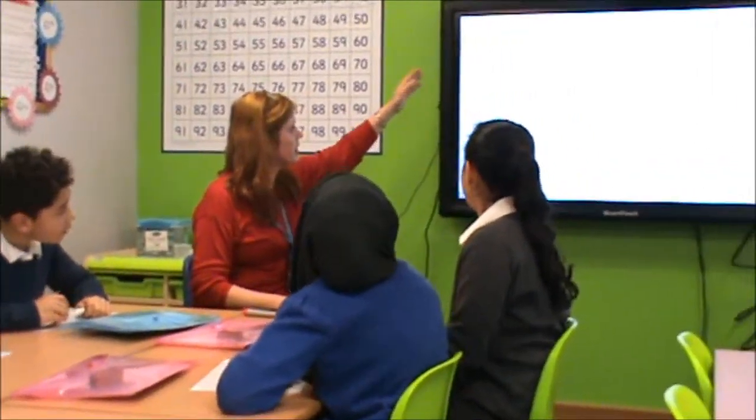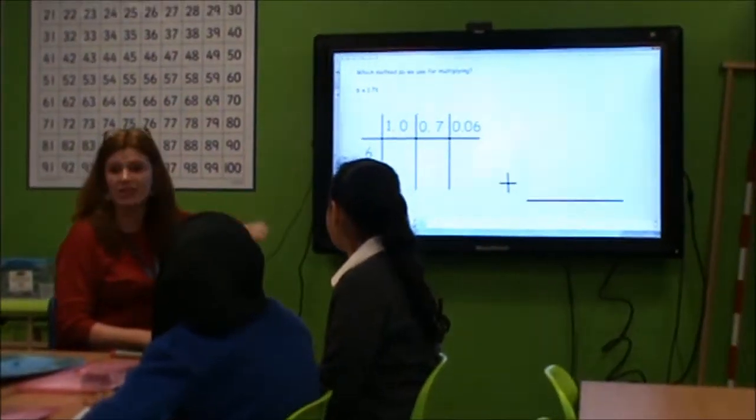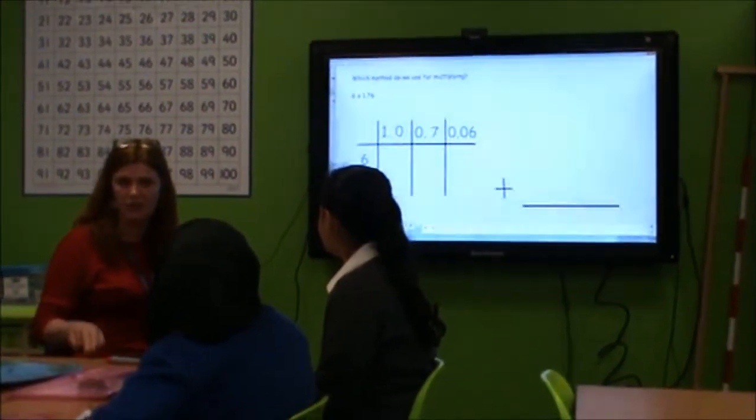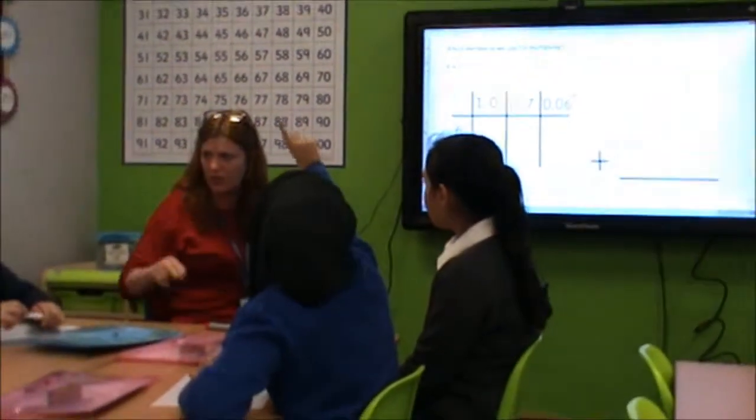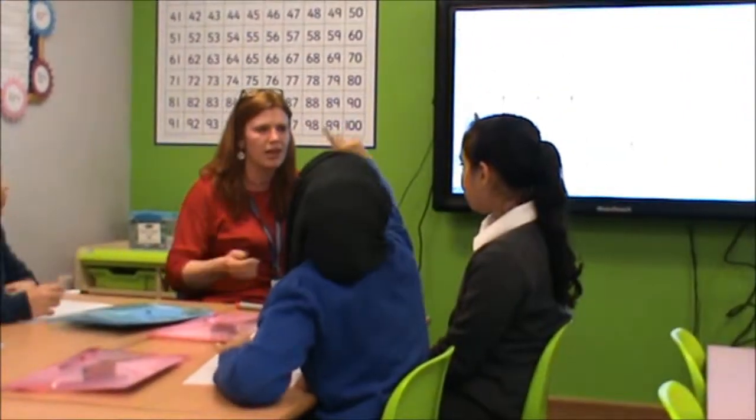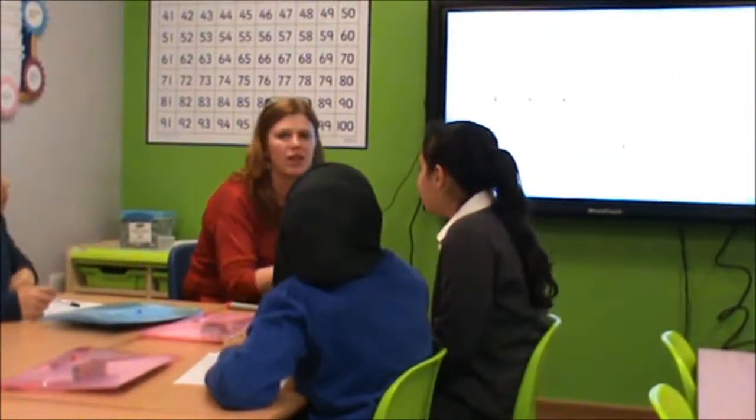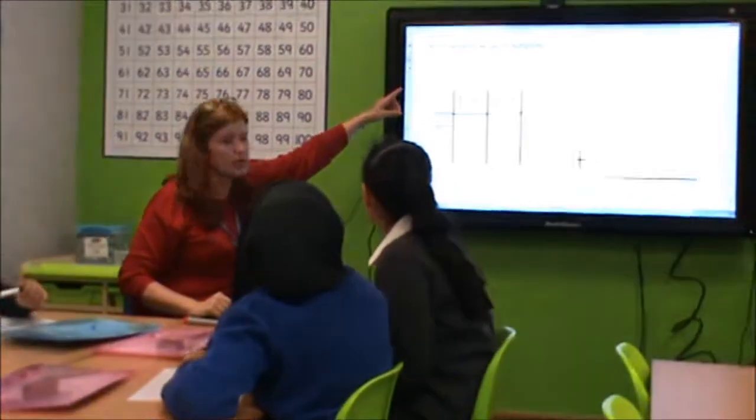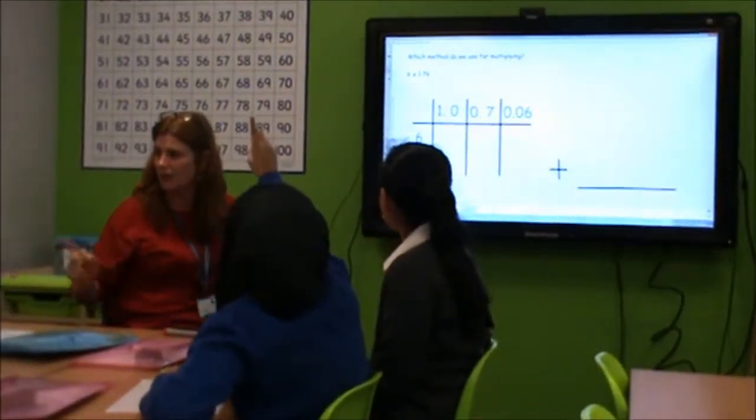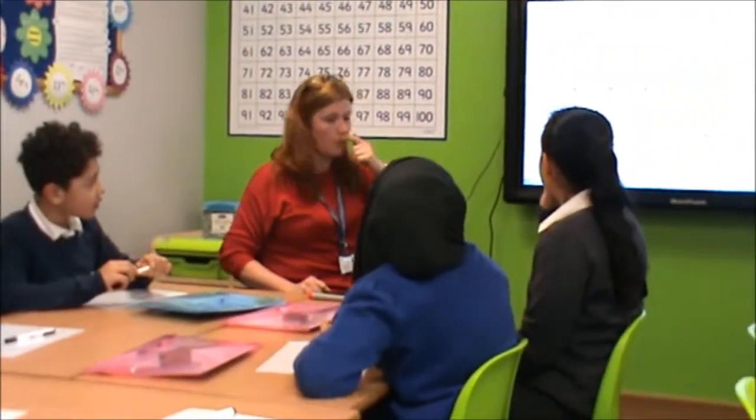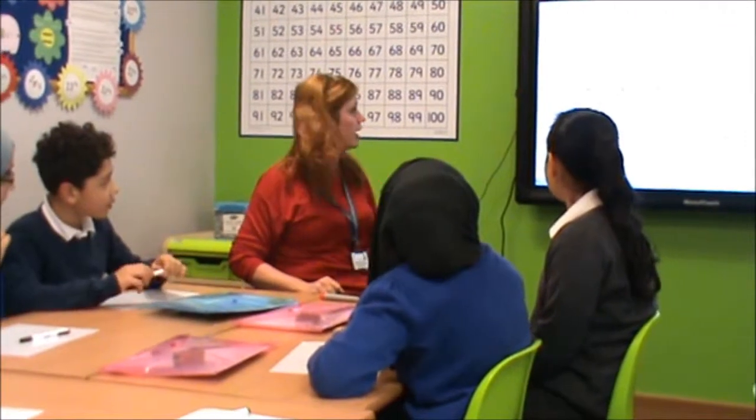So we're going to have a go at multiplying a decimal today. So that's 6 times 1.76. How is it easier to think of a decimal? How is it easier to think of a decimal when you're manipulating it? Think of it as money. Think of it as money. Absolutely right. So what would that be as money? 1.76. £1.76. Spot on.